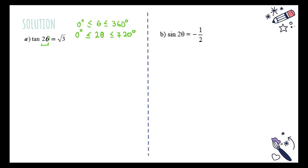Remember, students: when the given range is not the same as the angle in the question, we have to find the new range. The range for this question is 0° to 720° because the range given in the main question is for θ, but example 17a uses 2θ. It is very important that you modify your range before you start solving.